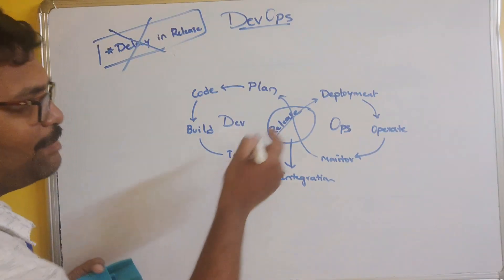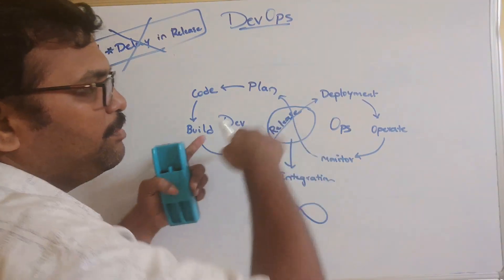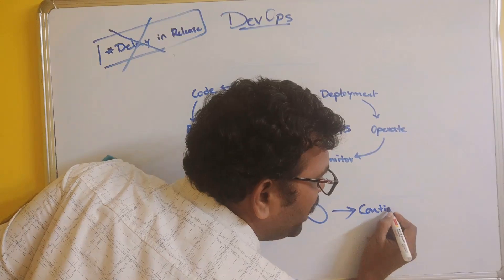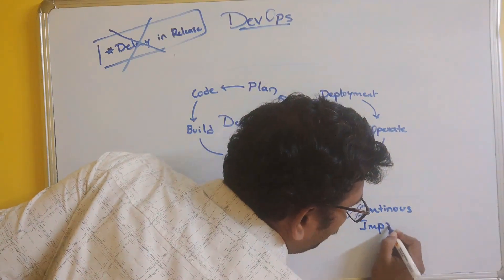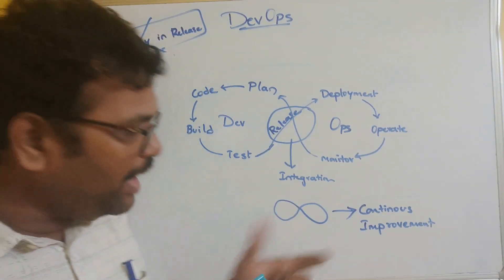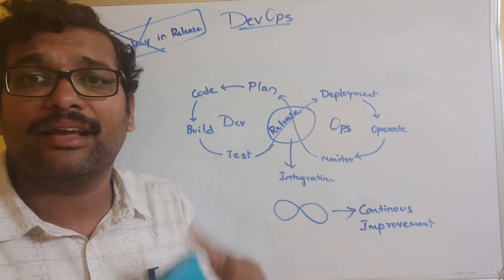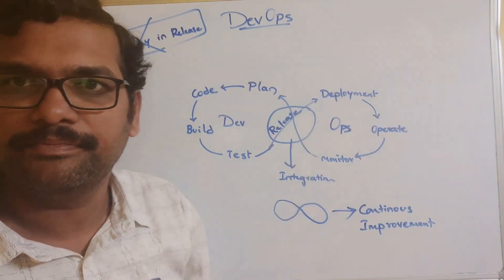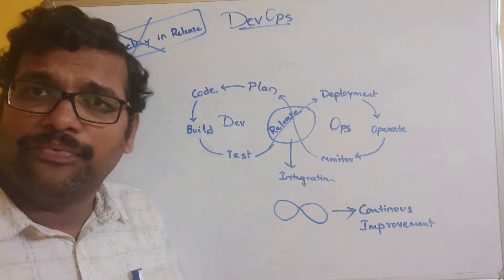The combination of the development team and operations team is the integration point. The overall DevOps symbol is similar to the infinity symbol, which means continuous improvement. With DevOps, there will be continuous improvement in the product with many releases. After every release, feedback is taken from the customer and again the cycle of plan, code, build, test, and so on continues.